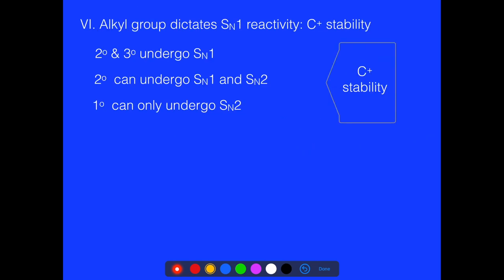Carbocation stability — the ability to form a carbocation — really helps in having an SN1 reaction occur. Looking at many reactions, we find that secondary and tertiary groups undergo SN1 reactions because they can stabilize the carbocation through hyperconjugation and permit the carbocation to form.